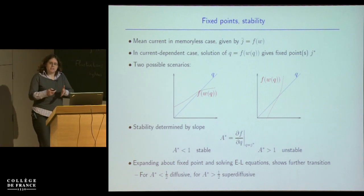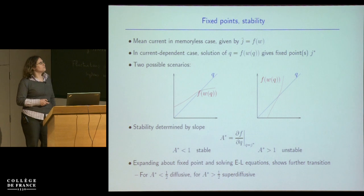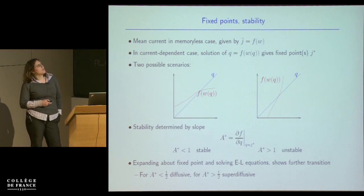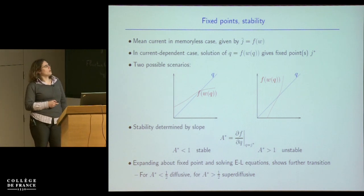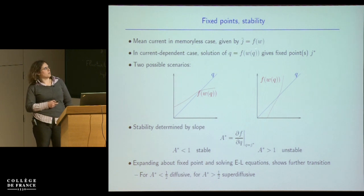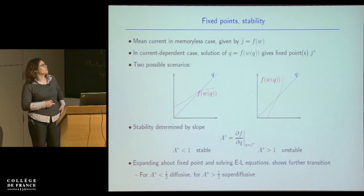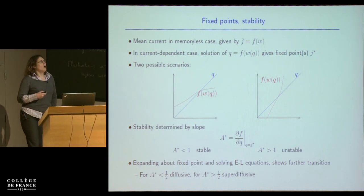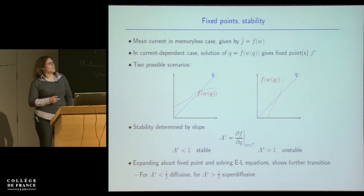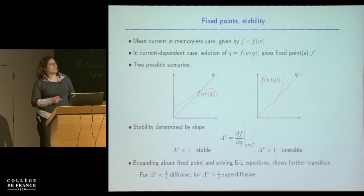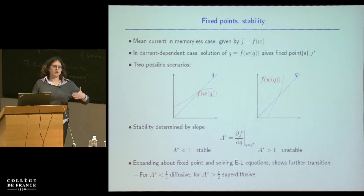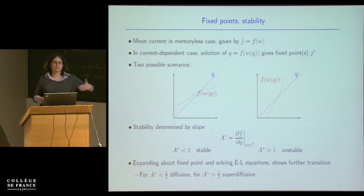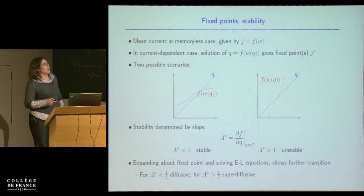Here's the fixed-point argument, which should at least give us information about what happens close to the mean current. Suppose I know that in the memoryless Markovian case I have some mean current which is some function f of all the rates in the model. Then I claim that under certain conditions, in the current-dependent case, I have a fixed point at just that value of the current such that f of the rates at that current gives me back the same current. In other words, at just the value of the current such that what I predict to see next — the mean current — is the same as the current I had in the past.